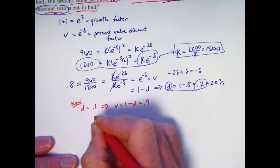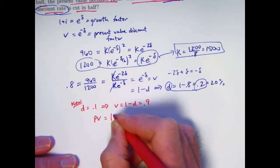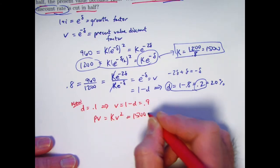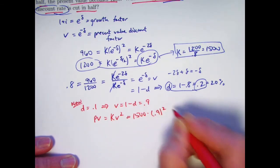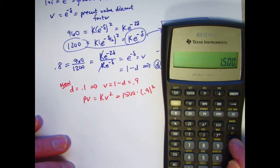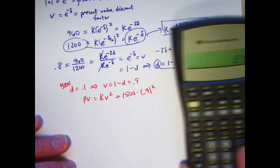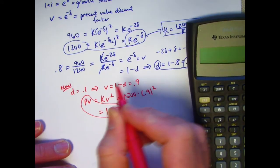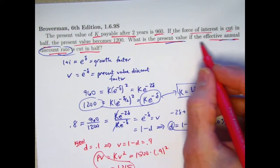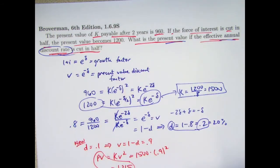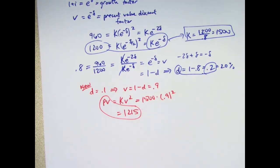And therefore the present value that we are after is going to be K times V squared, 1500 times 0.9 squared. 0.9 squared is 0.81, so just multiply 1500 times 0.81. 1215 is the answer that we are after. That is the present value of K that's payable again two years from now if the effective annual discount rate is cut in half, in this case it turned out to be from 20% to 10%. Once again, the final answer is 1215.